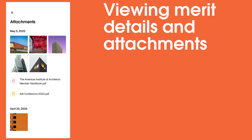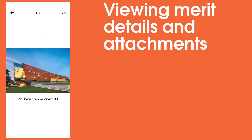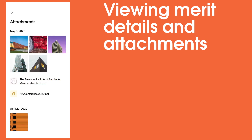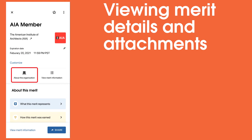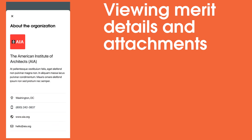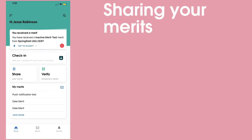Some Merits have attachments, such as photos, videos, and PDFs. You can view these from the app. Select About the Organization to see more information about the issuing organization of this Merit, including the organization's contact info. You can share your Merits with someone who needs to verify your credentials, such as a potential employer, directly from the Merit app. To start, navigate to the main screen of the app and select Share Your Merits.